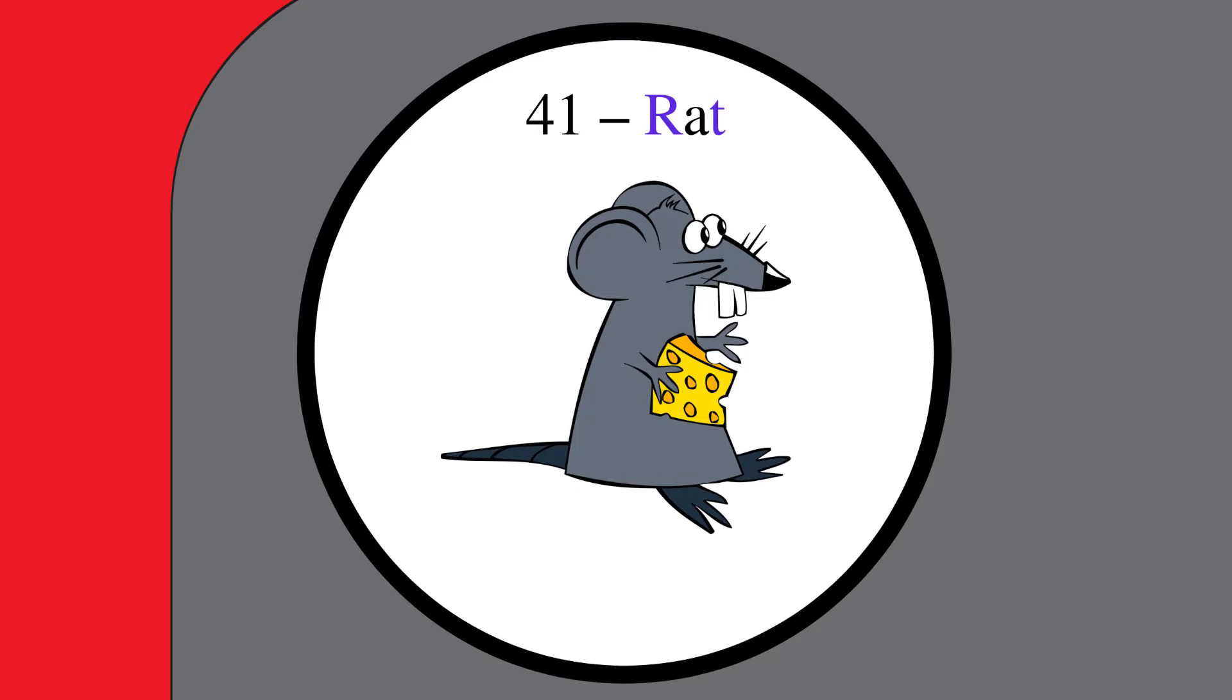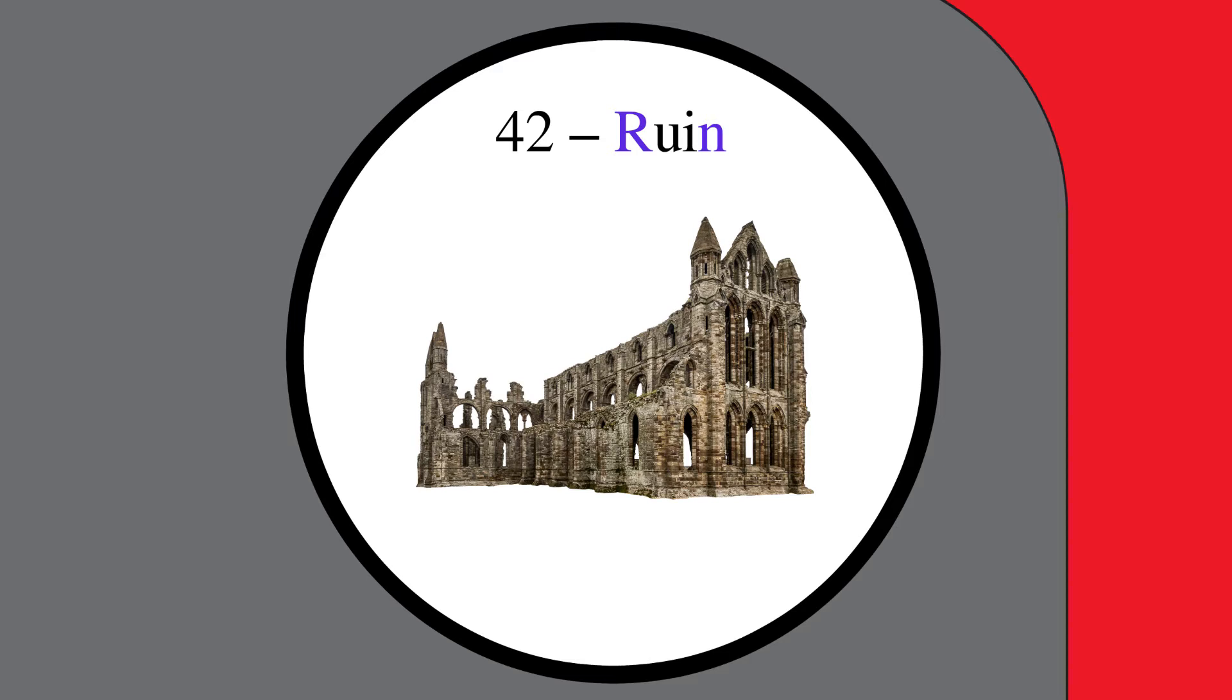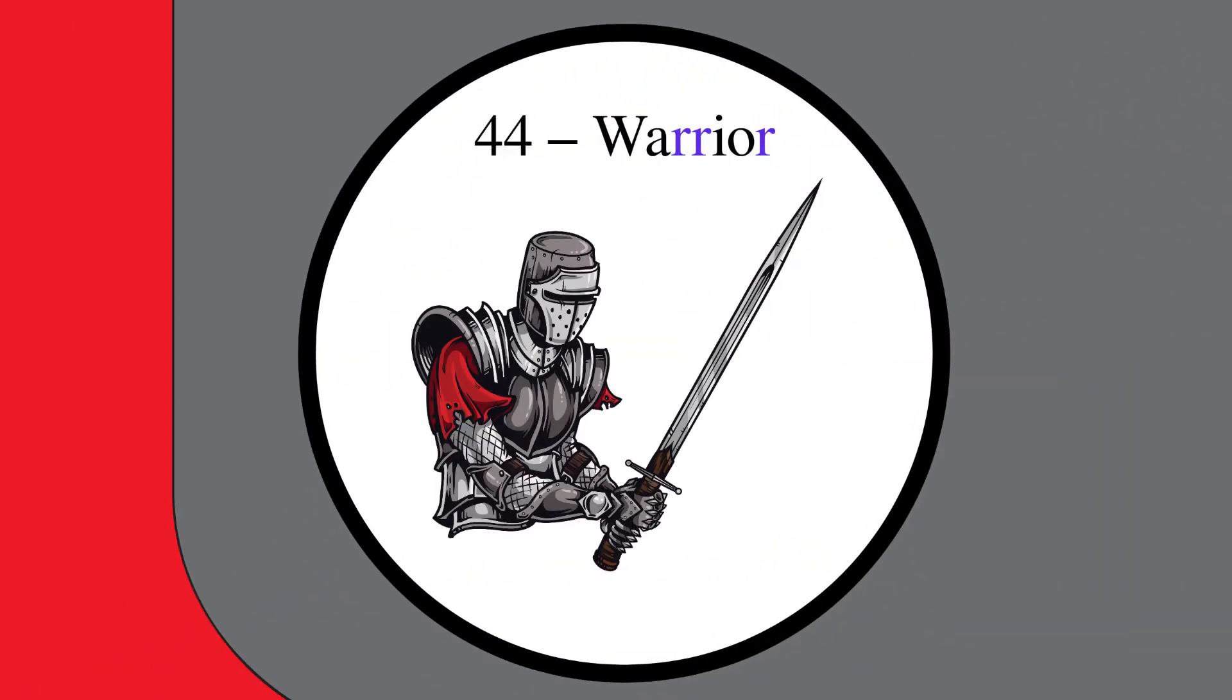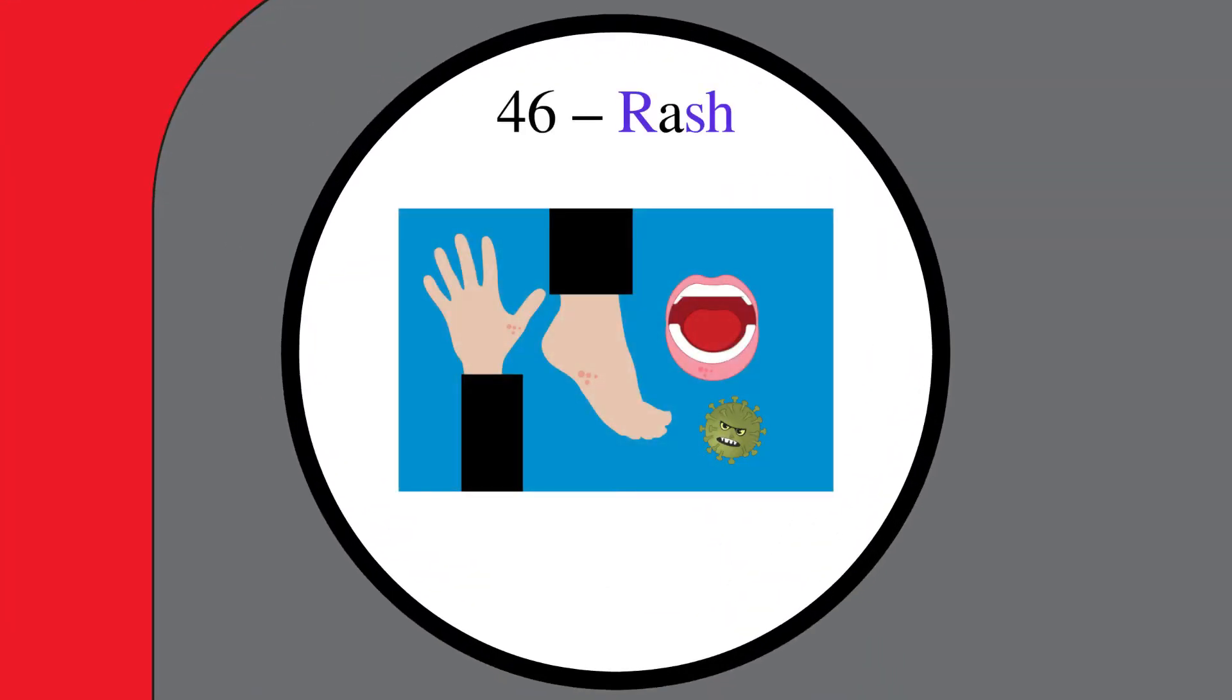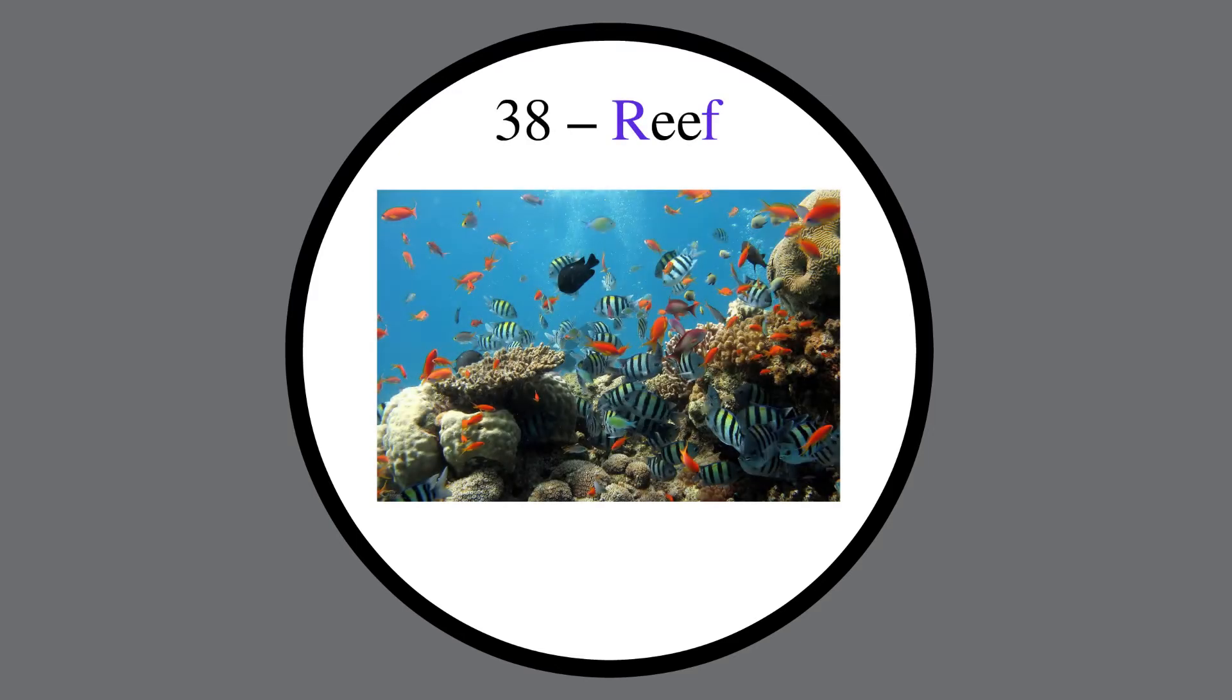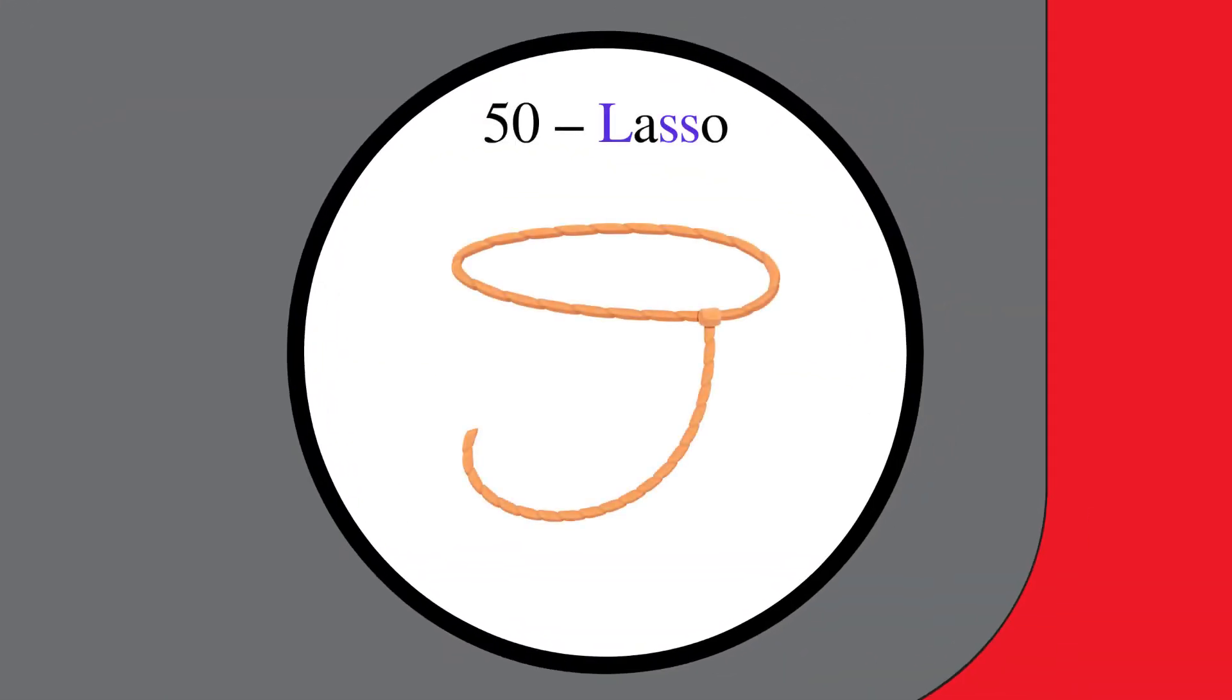We start out with 41 Rat, 42 Ruin, 43 Ram, 44 Warrior, 45 Roll, 46 Rash, 47 Rake, 48 Reef, 49 Ruby, 50 Lasso.